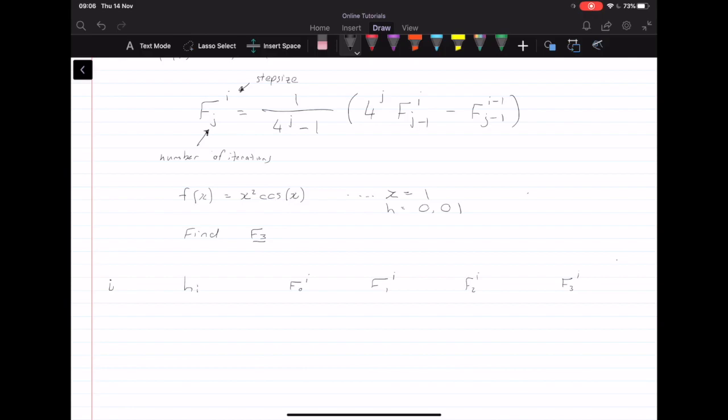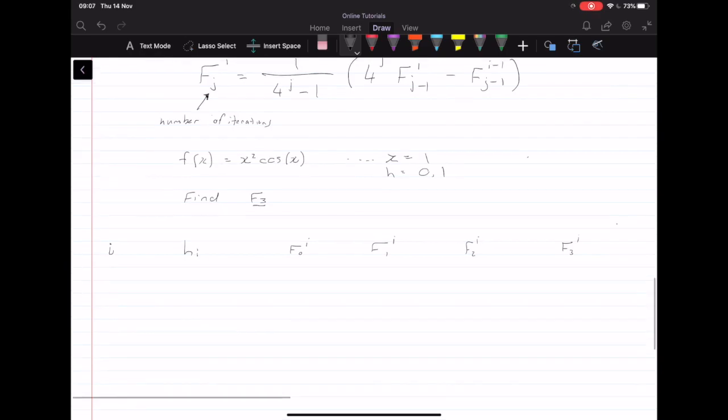So with Richardson's, we've been told this is our function, we have to find the derivative at x equals 1, and we have h equals, not 0.01, but let's reuse 0.1. So let's put into the table what we have so far.